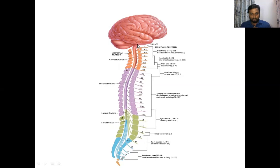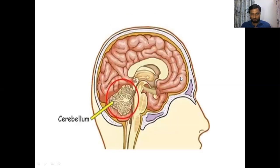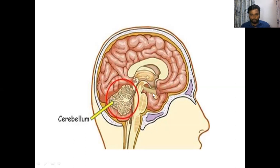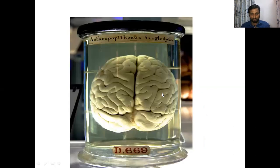The brain is one part of the CNS. The brain has three divisions: forebrain, midbrain, and hindbrain. The forebrain includes the cerebrum, thalamus, hypothalamus, subthalamus, and metathalamus. The midbrain is the connecting part. The hindbrain includes the pons, medulla, and cerebellum. Today we are going to discuss the cerebrum, which is part of the forebrain.